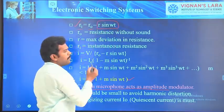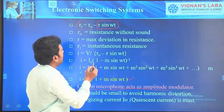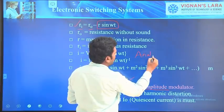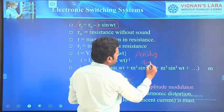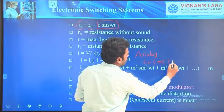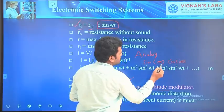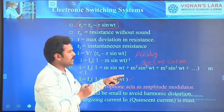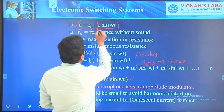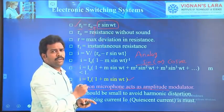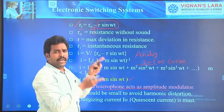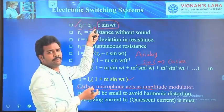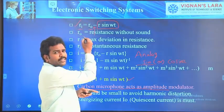This is the resistance after applying the voice signal. We know that generally we represent analog signals in terms of sine or cosine. Here I am taking a sine term. Why minus here? Because whenever sound is applied, the resistance decreases, and the decremented resistance is shown with the help of this minus sign. This is the formula of instantaneous resistance.